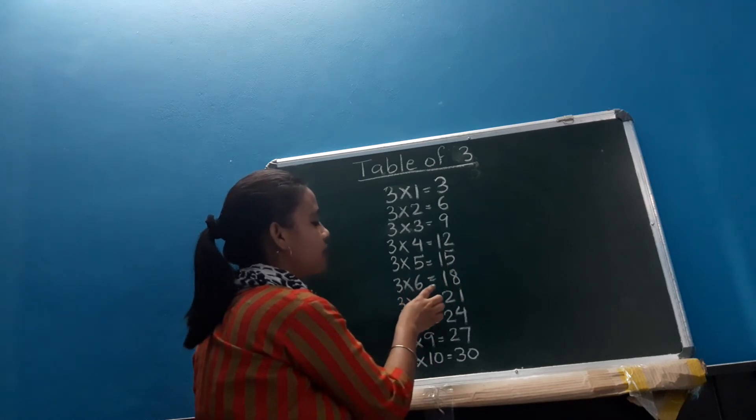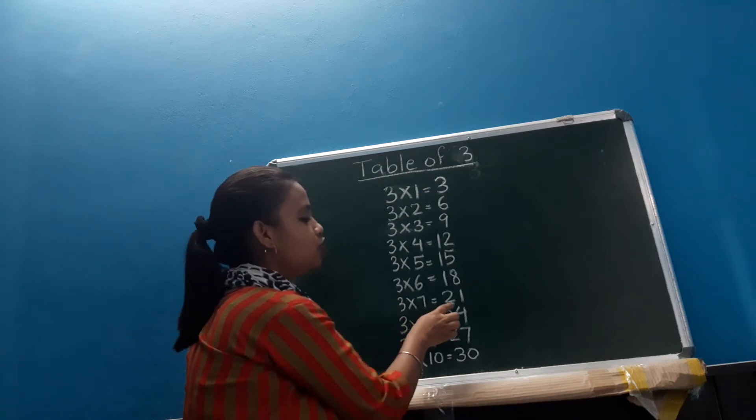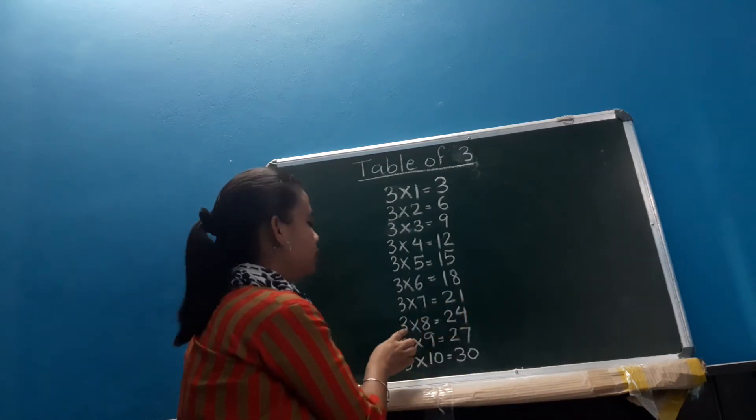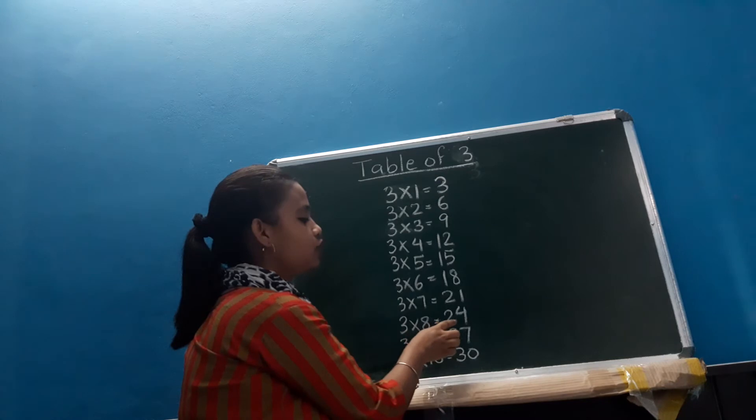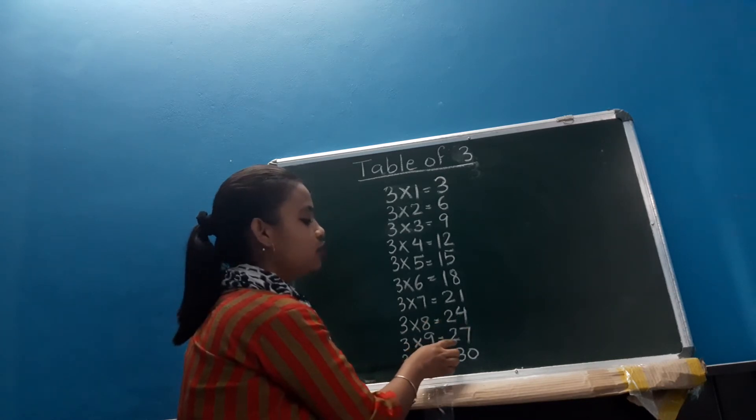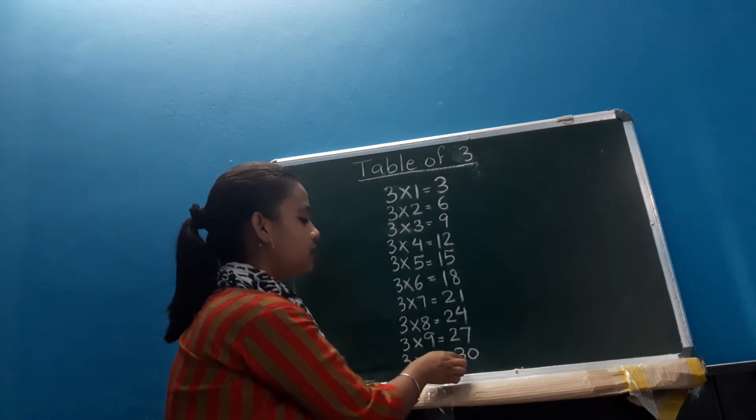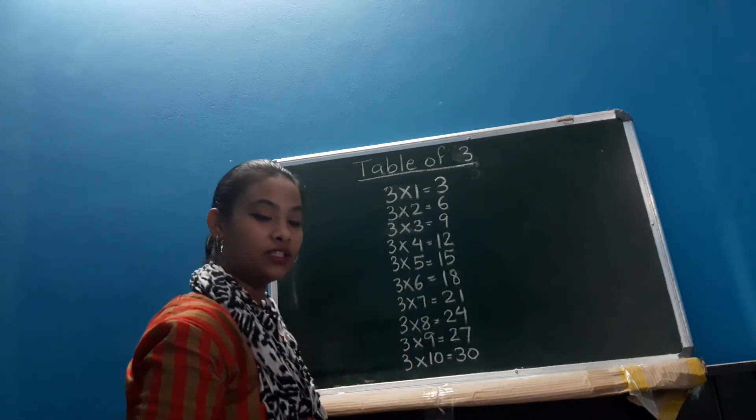3 6's are 18, 3 7's are 21, 3 8's are 24, 3 9's are 27, and 3 10's are 30, alright?